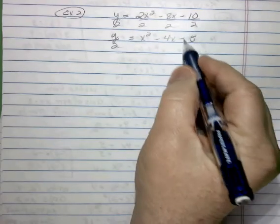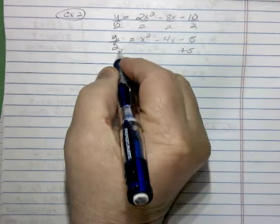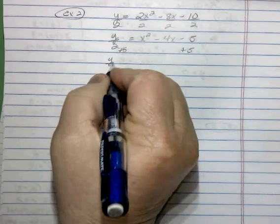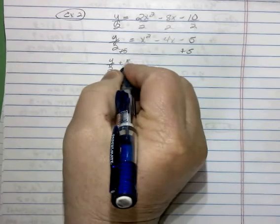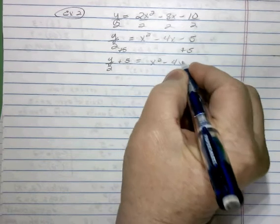Next, again, we're going to get rid of this constant term. So we're going to add 5 to both sides of the equal marks. So we have y divided by 2 plus 5 equals x squared minus 4x.